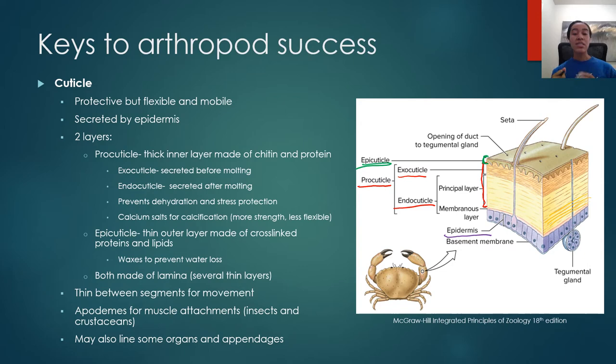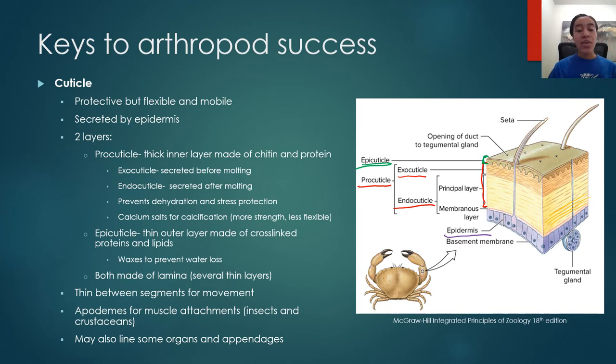There are thin cuticle segments at joints that allow the arthropod to move. There are also muscle attachments directly to the cuticle - these attachment points are called apodemes. This is exactly where the muscle attaches to the cuticle, and as discussed, this allows organisms to move more quickly and has enabled flight and various other movement advantages. Some organs and appendages are also lined with cuticle depending on the species.